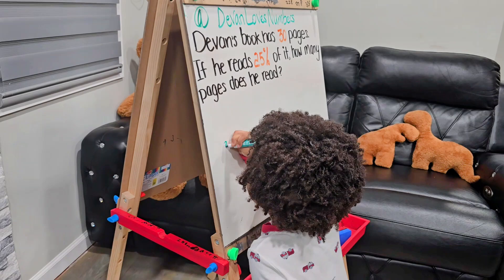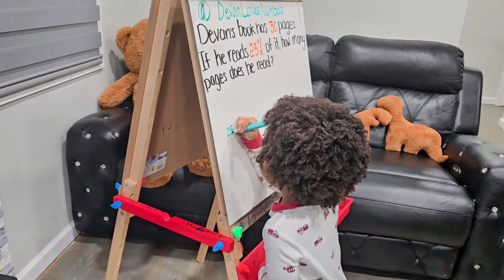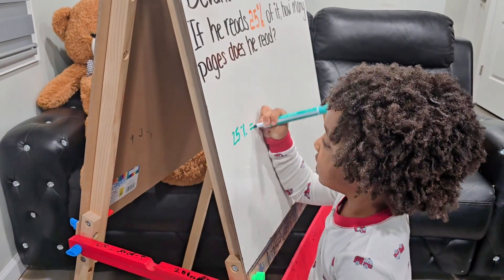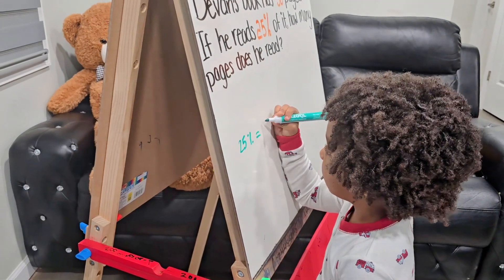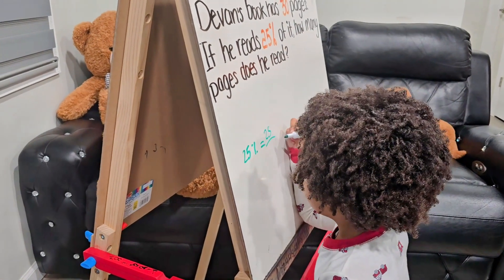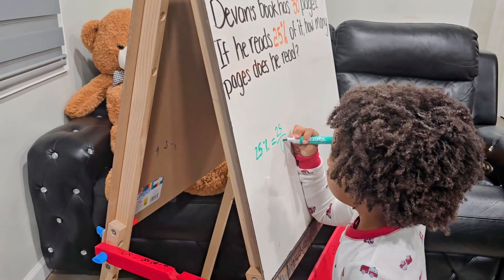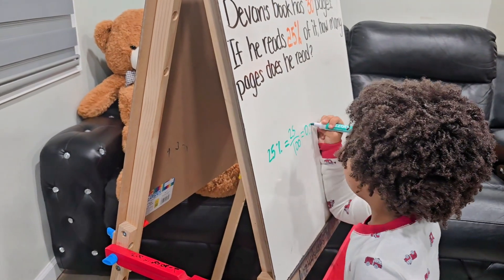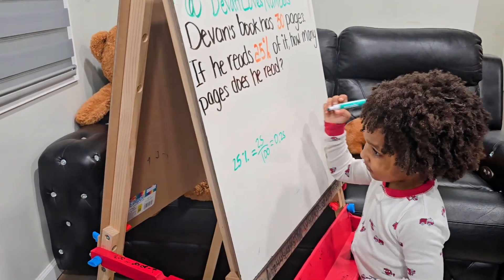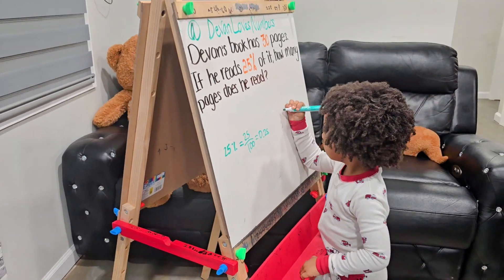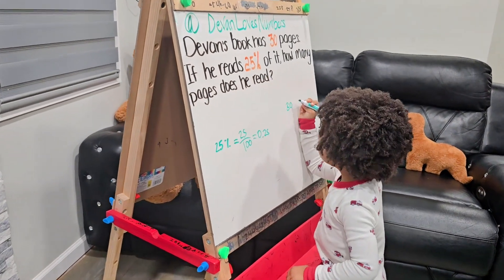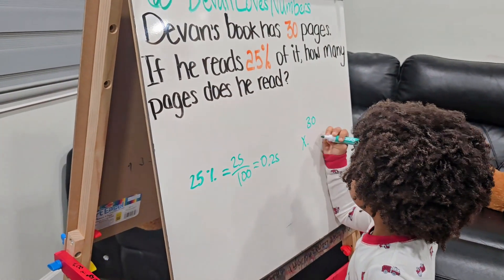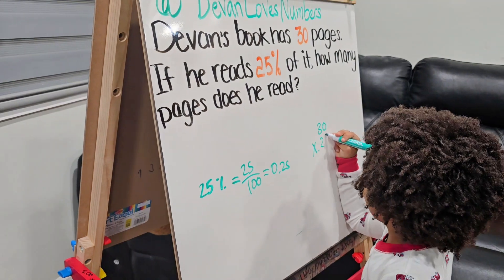Twenty-five percent equals twenty-five hundredths equals zero point two five. Thirty times point two five.